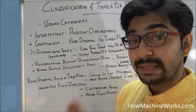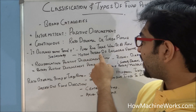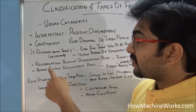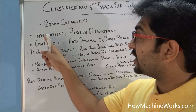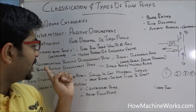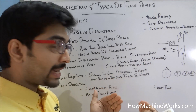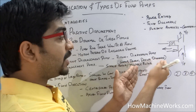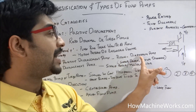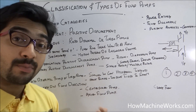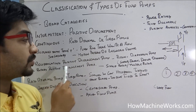Going into the subcategories of intermittent positive displacement pumps, these subcategories are based on the motion pattern of the enclosed volume flow. There are reciprocating-type and rotary-type positive displacement pumps. Reciprocating positive displacement pumps include piston-type and diaphragm-type pumps, available in single, double, and duplex discharge configurations. The rotary-type positive displacement pump includes single rotor and multi-rotor types.